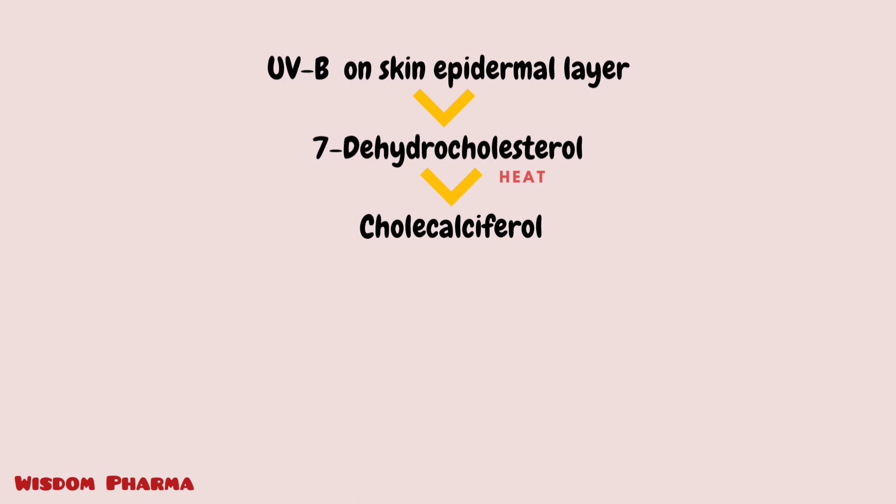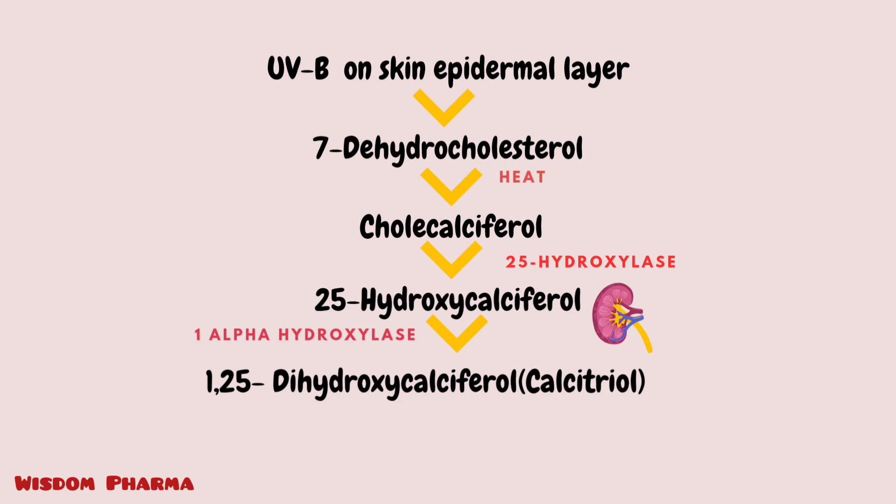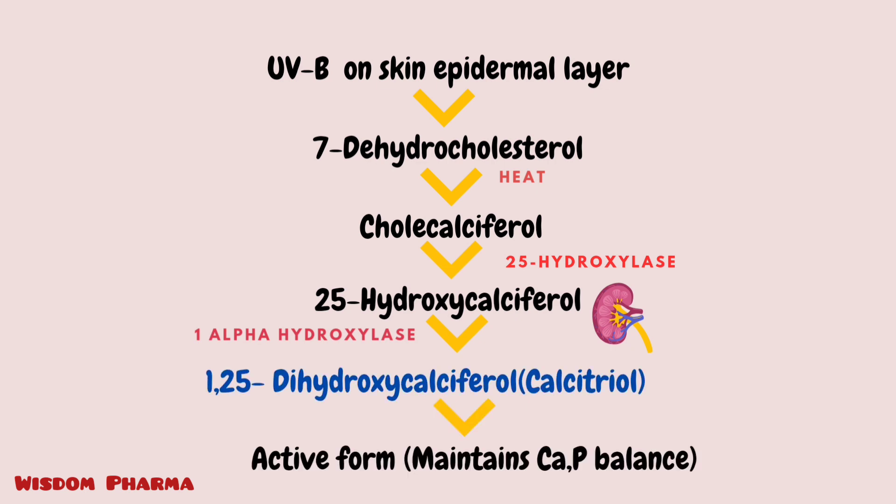The 7-dehydrocholesterol in the skin is converted by UVB radiation to cholecalciferol, which is an inactive form of vitamin D. This then travels to the liver, where it is converted to 25-hydroxycalciferol. After that, there is an enzyme called alpha-1-hydroxylase in the kidney, which converts the 25-hydroxycalciferol to 1,25-dihydroxycalciferol — also called calcitriol — which is the active form of vitamin D.